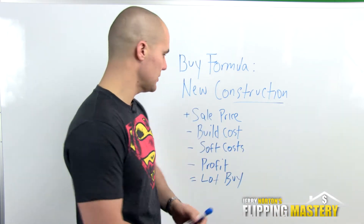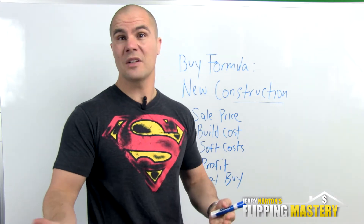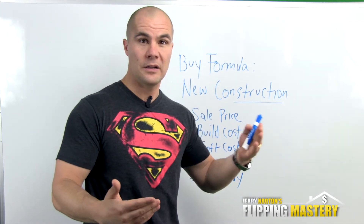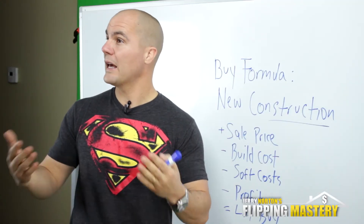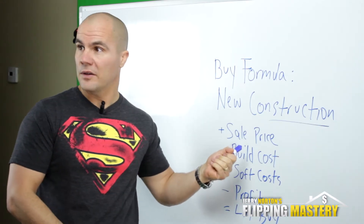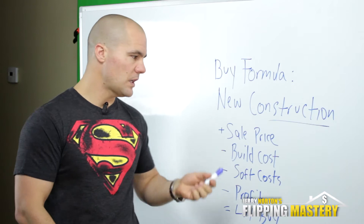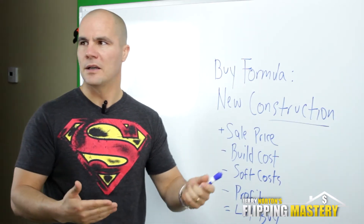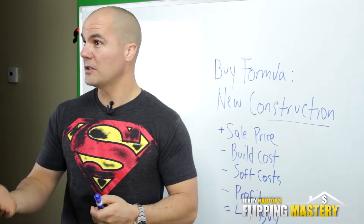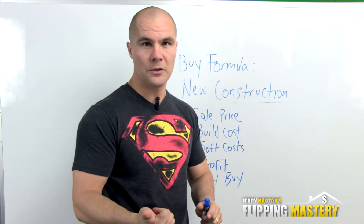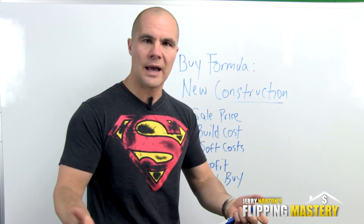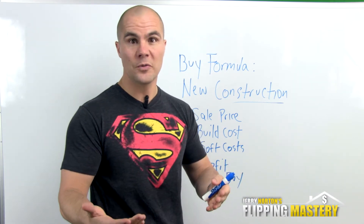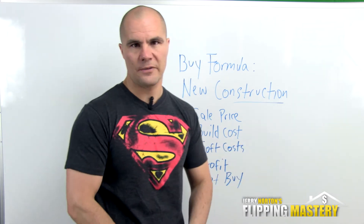Once you have your sale price, the next thing we look at is build cost — what it's going to cost to build that home. We use price per square foot as our unit of measurement. For example, if new homes are selling for $250 a square foot and we can build for $130 a square foot, we have a spread — that's what we're looking for. Keep in mind build cost also includes any site improvements: clearing the lot, retaining walls, footings for wet ground, and so on.